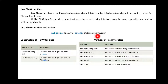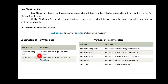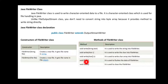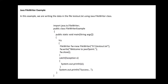Unlike FileOutputStream class, you don't need to convert String into byte array because FileWriter provides methods to write directly. FileWriter accesses information from the superclass OutputStreamWriter, which allows you to write or create an object for your file. There are two constructors: FileWriter(String file) and FileWriter(File file). Methods include write(String), write(char), write(char[]), flush() — to clean up useless information — and close().